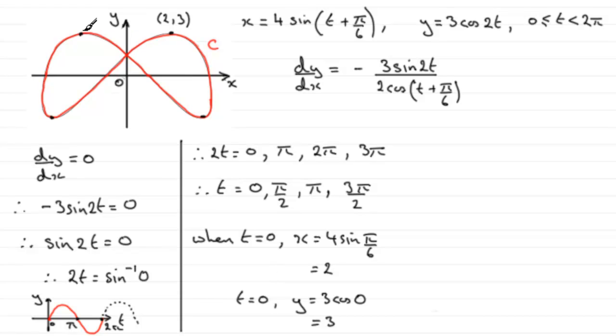Now you can expect, by symmetry of the curve, this one to be at minus 2, 3. In fact, it is minus 2, 3. I'll leave it to you to check out. This occurs when t equals pi.